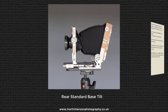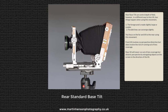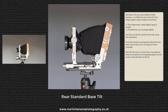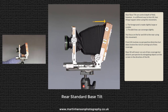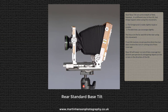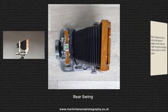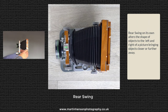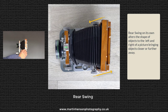To correct or distort shapes within the composition, we use the rear standard. For example, if there's a rock in the foreground and you want it to appear larger, tilt the rear standard backwards. To make it look smaller, tilt the rear standard forward. With swing on the rear standard, you can manipulate the apparent shape of objects to the right and left of the composition, as shown in this picture.